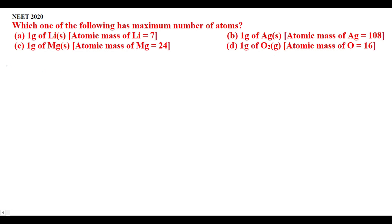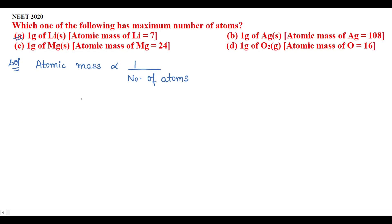For this there is a very simple trick you should know: atomic mass is inversely proportional to the number of atoms. So the element having the largest atomic mass will have the least number of atoms, and the element having the minimum atomic mass will have the maximum number of atoms. According to this, option A is the correct one.